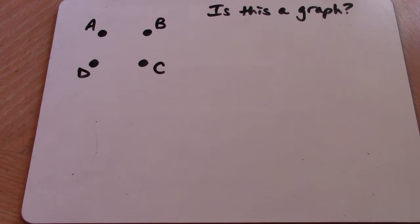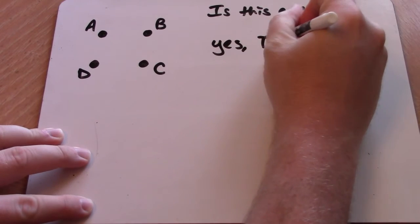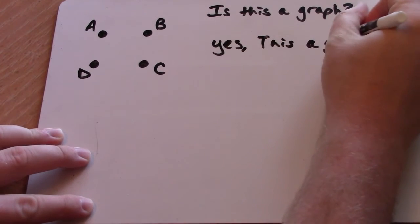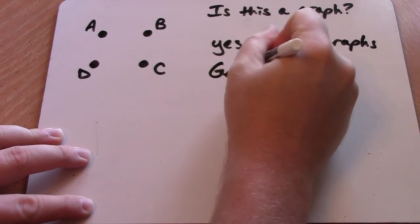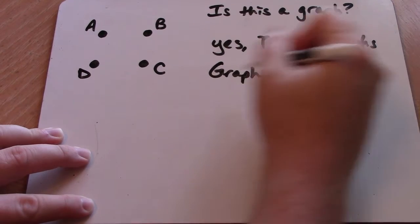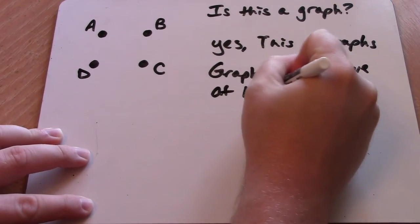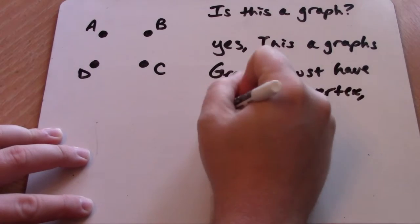So the answer to this question is a relatively simple one. The answer to this question is yes, this is a graph. Graphs must have vertices. Specifically, they must have at least one vertex. They do not need edges.